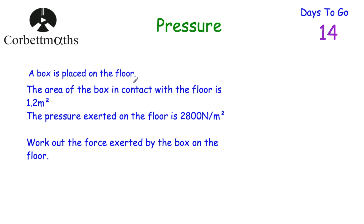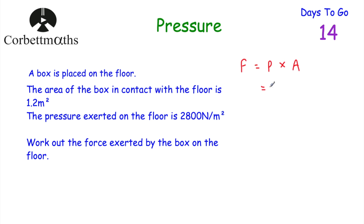A box is placed on a floor. The area of the box in contact with the floor is 1.2 metres squared, and the pressure exerted on the floor is 2,800 newtons per metre squared. Find the total force exerted by the box on the floor — press pause now. Since every metre squared has 2,800 newtons applied, we use force equals pressure multiplied by area: 2,800 multiplied by 1.2 equals 3,360 newtons.